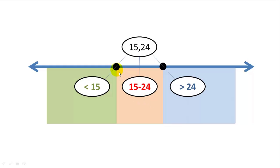We didn't cover border cases — what if you try to insert a 15? That's really up to you to decide how you want to implement that for your tree. You could either block duplicates and not allow them in the tree at all, or you could force duplicates to the left or whatever you prefer.